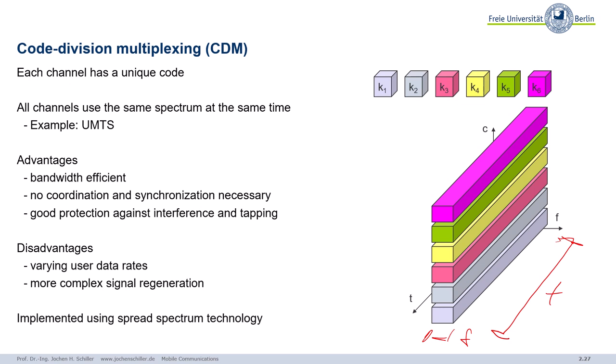There are methods to separate channels by code, heavily used by UMTS, CDMA2000, IS-95, and different cellular phone systems. The nice thing is you do not need as much coordination and synchronization — you can send at the same time at the same frequency without coordinating frequencies the way you must in TDM or FDM. With clever coding you can also protect communication against interference and tapping: if you don't know the code, you cannot listen into the communication.